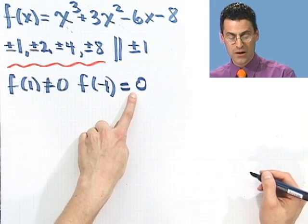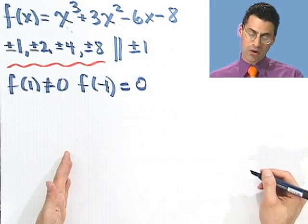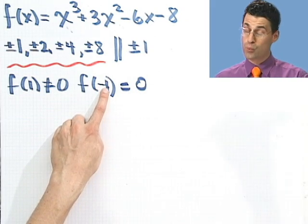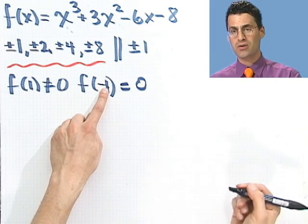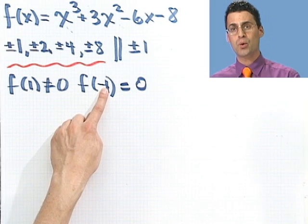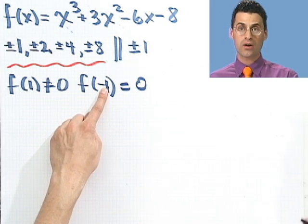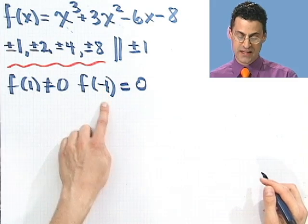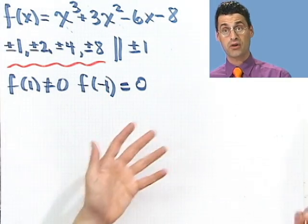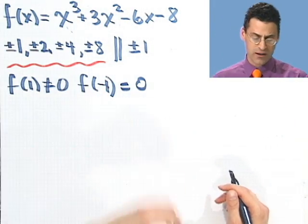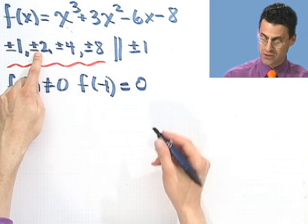OK, so there's a root right there. Boom. I've got one. So what can I do now? I could see if there's others. Or I could just now say, if -1 is actually a 0, that means that x + 1 is a factor. And then I can actually use the division algorithm or the synthetic division method to see what's left over. So either one's fine. Let's keep going on our list, though, and see if we can maybe detect some other ones.